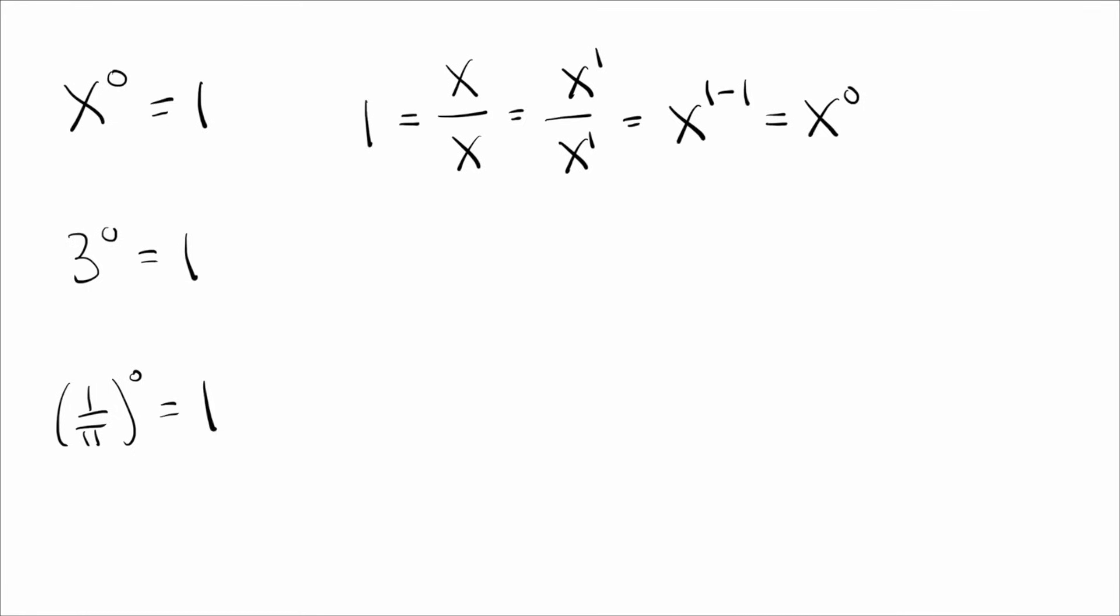So there we did it for x. Let's go ahead and do it again for three just to show that it works exactly the same way. So three over three, that obviously equals one. On the other hand, I can write that as three to the one power over three to the one power, and then I can take the top power minus the bottom power, which gives me three to the zero.